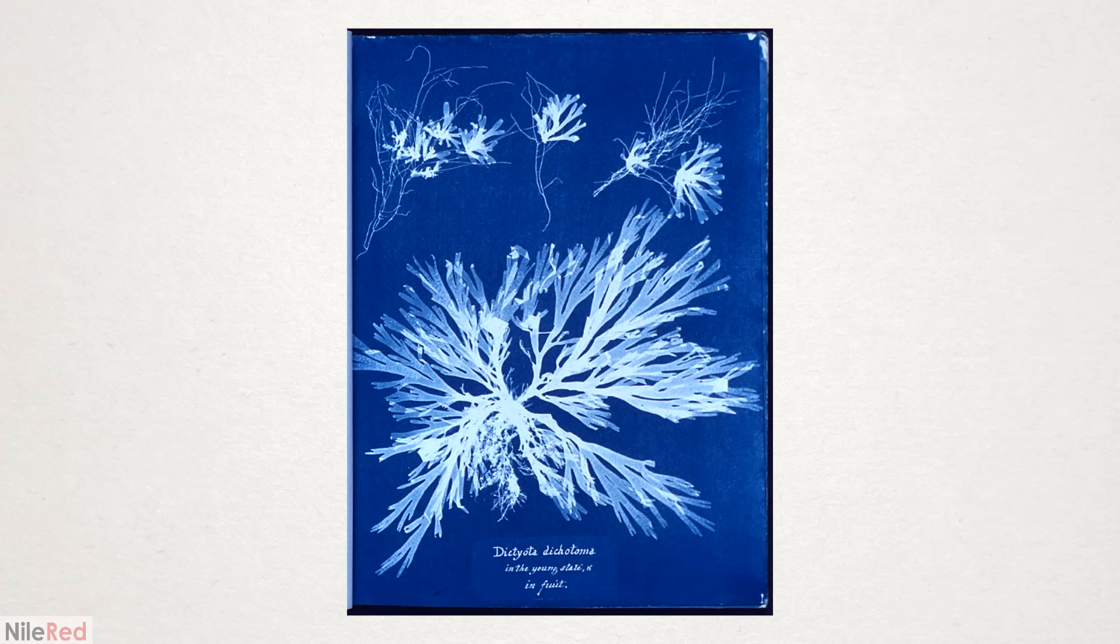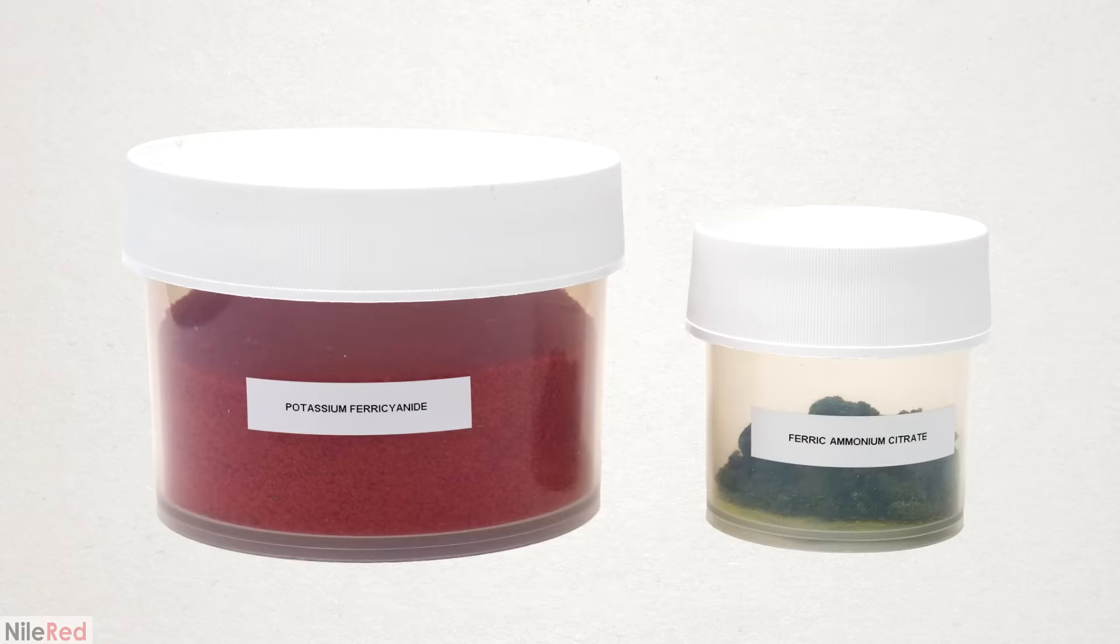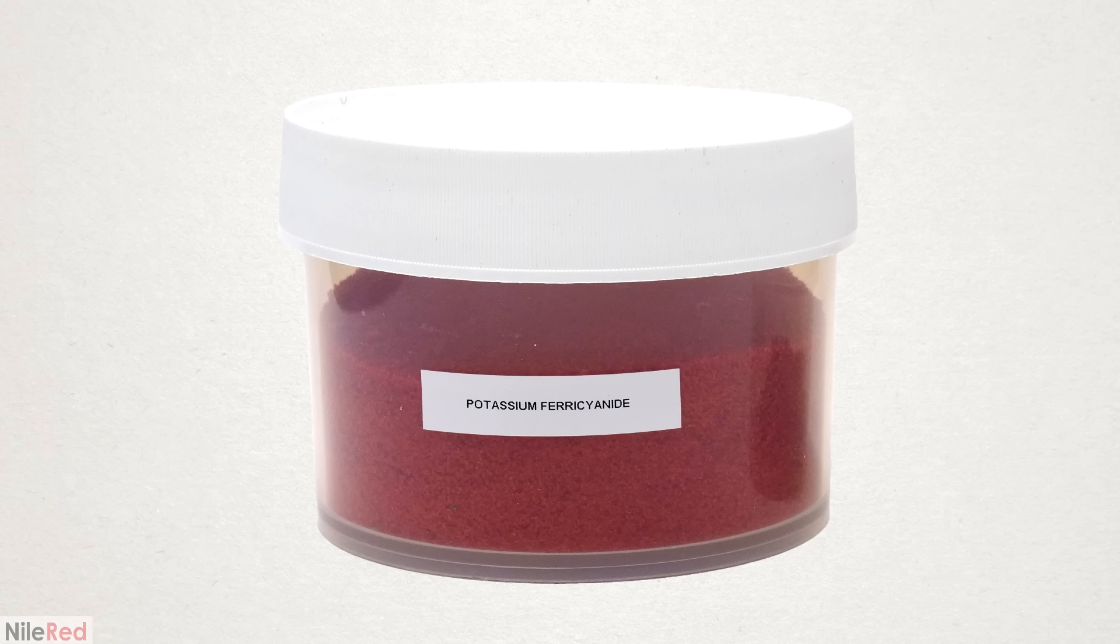In this process the Prussian blue is formed directly in paper and it was classically used to make blueprints. Over the years many different formulations were used, but the most popular one uses potassium ferricyanide and a UV sensitive iron compound called ferric ammonium citrate.